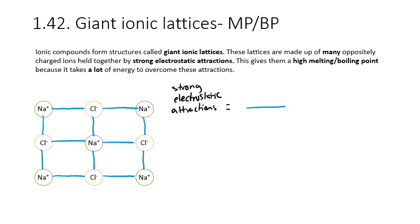Unlike covalent bonding where you get simple molecular structures, ionic compounds form giant ionic lattices. These lattices are made up of many oppositely charged ions held together by strong electrostatic attractions. It is the breaking of these strong electrostatic attractions that needs to be done to melt or boil ionic compounds, and therefore it takes a lot of energy to overcome these attractions. In this 2D diagram representing a 3D lattice, every positive charge is surrounded by negative charges and vice versa — an alternating structure of Na1+ and Cl1- ions, with blue lines representing the strong electrostatic attractions.